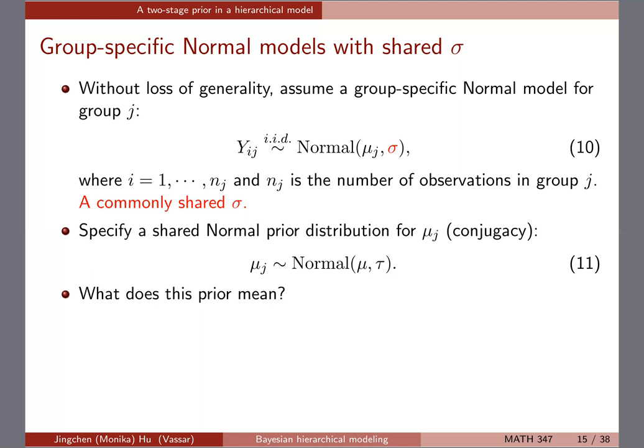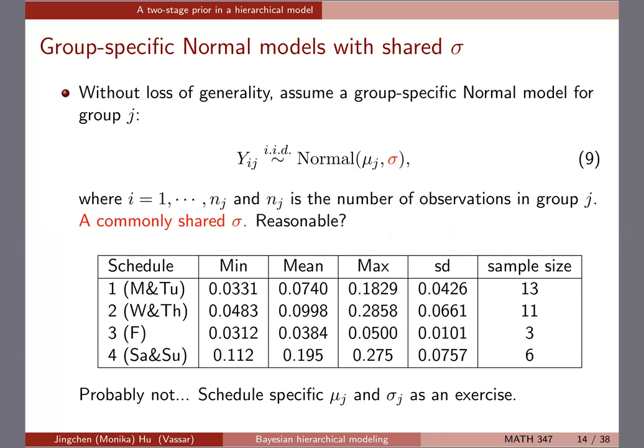Since all mu_j's come from the same normal distribution centered on mu, looking at the sample means gives us guidance. The sample means range from about 0.04 to 0.2 across schedules — schedule four is the highest. It's still plausible they come from the same normal distribution; the normal is a range of values, and this gives us some idea of how to set mu and tau if we fix them.